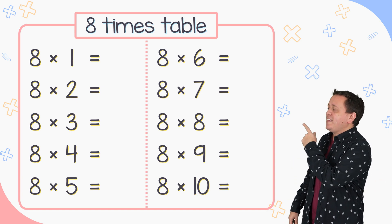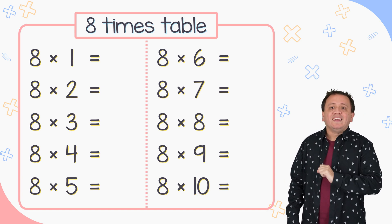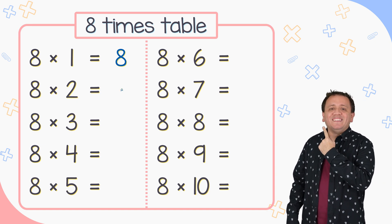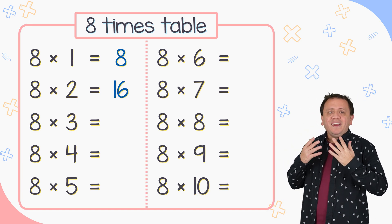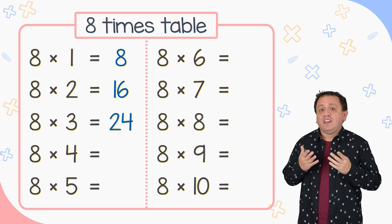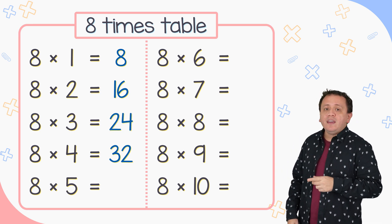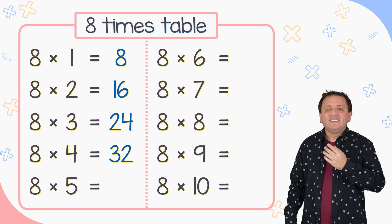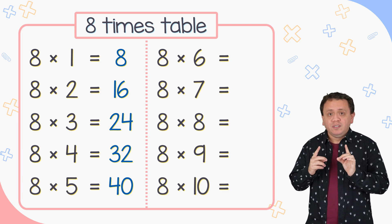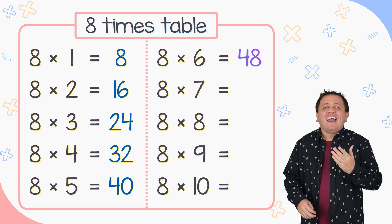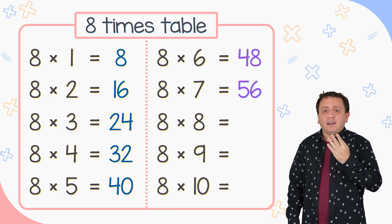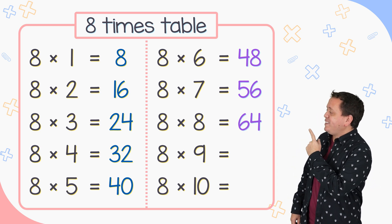And now the 8 times table. 8 times 1 equals 8. 8 times 2 equals 16. 8 times 3 equals 24. And 8 times 4 equals 32. 8 times 5 equals 40. 8 times 6 is equal to 48. 8 times 7 is equal to 56. And 8 times 8 equals 64.